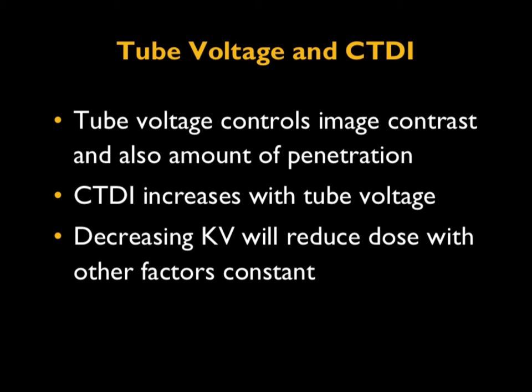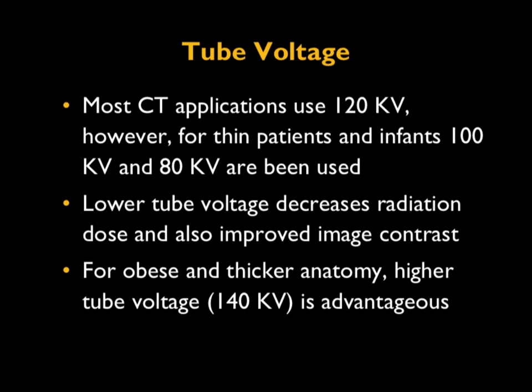At the same time, lower tube voltage improves the image contrast. However, for obese patients and thicker anatomy, we sometimes have to go to a higher tube voltage such as 140 kV, which has the advantage of penetrating thick portions of the body. The diagnostic tube voltages in X-ray tubes go anywhere from 50 kV to 140 kV. Anything higher than that, the X-ray energy is too high, which diminishes image contrast. That is why we confine the tube voltage to less than 140 or 150 kV. Tube voltage controls image contrast and the amount of penetration.